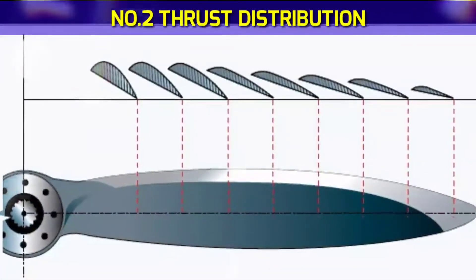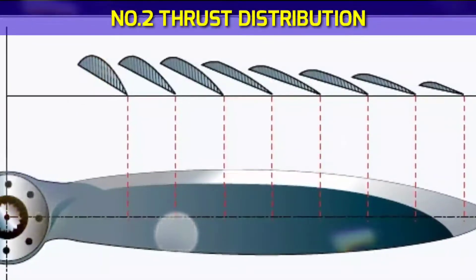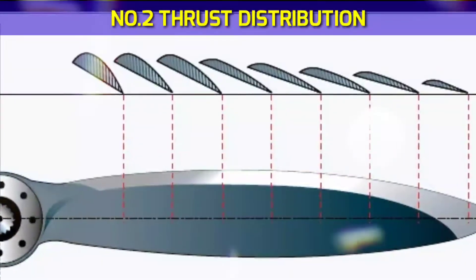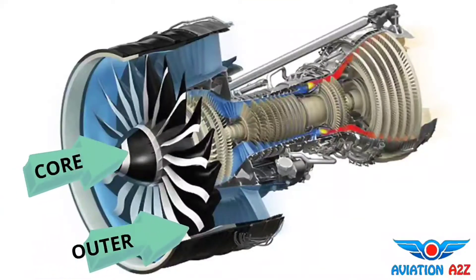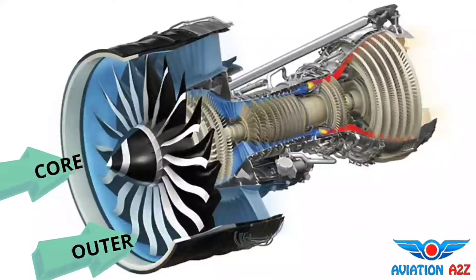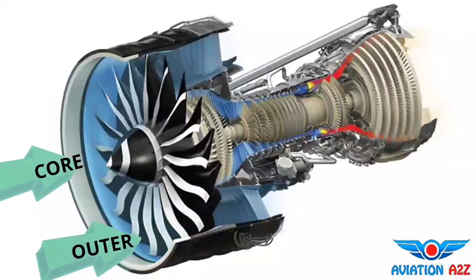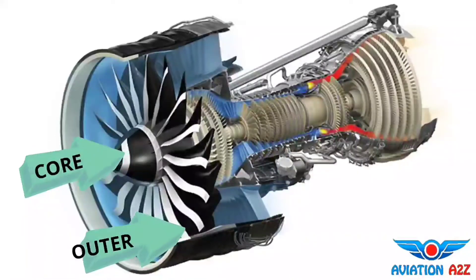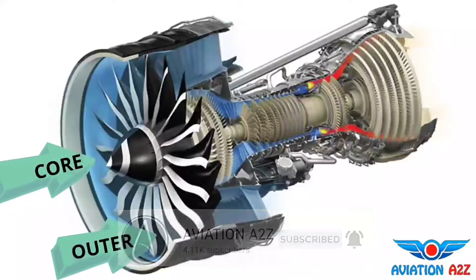Number 2: Thrust Distribution. The fan blades of a turbofan engine act similar to a propeller and have two main purposes. Let's divide the fan blade into two parts: outer and core. The outer part will act more or less like a propeller for bypass air and generate thrust, while the core part will act like a compressor, providing compressed air to the next stage. This is the scenario for a high bypass ratio turbofan engine. To make thrust distribution even throughout the blade, we twist the blades.